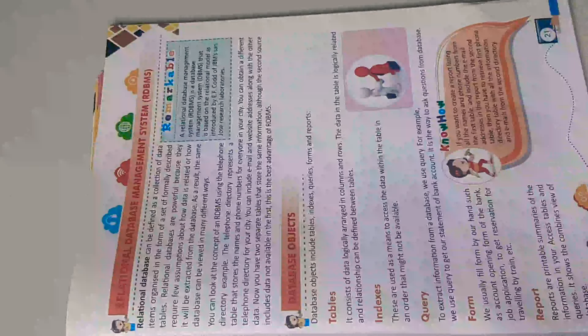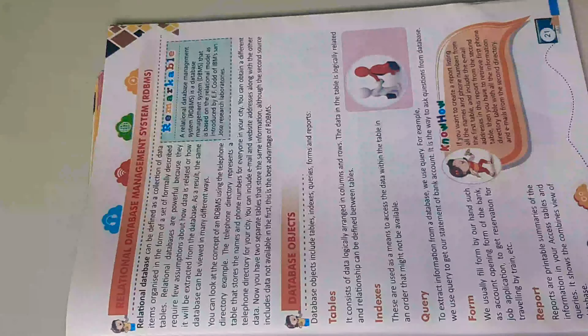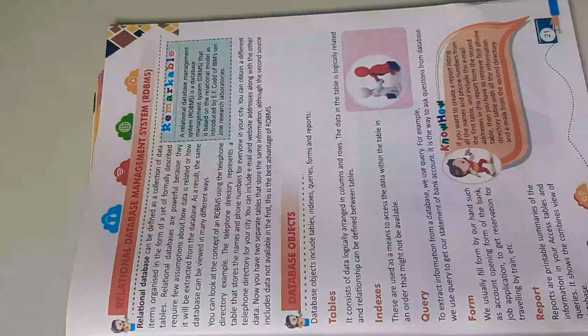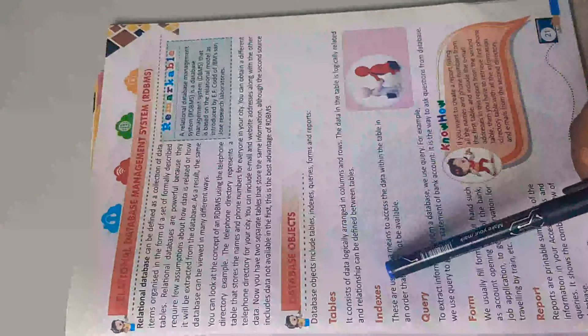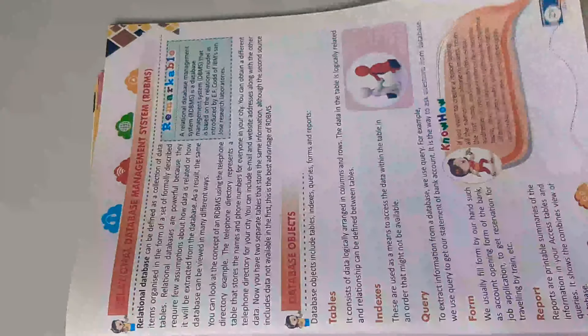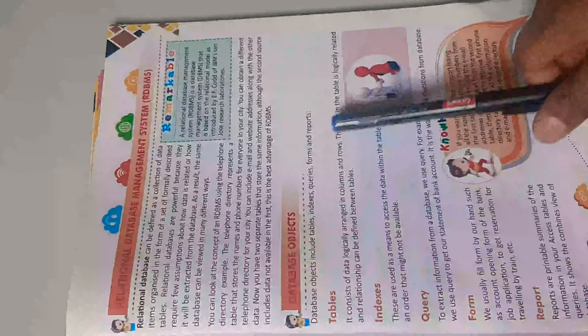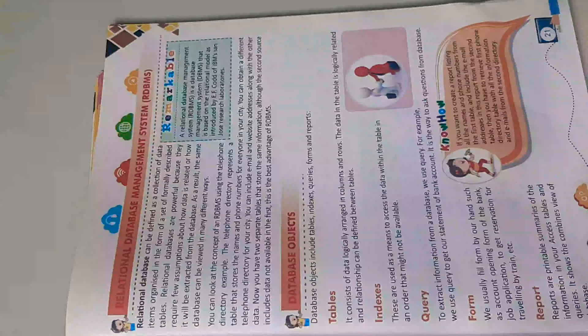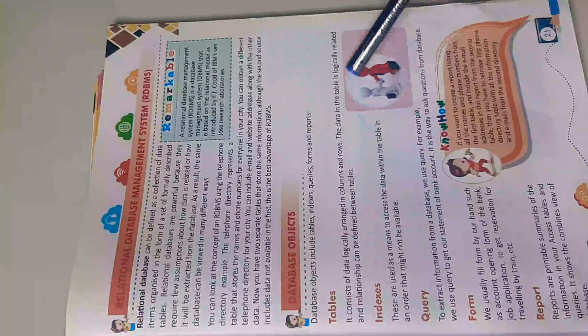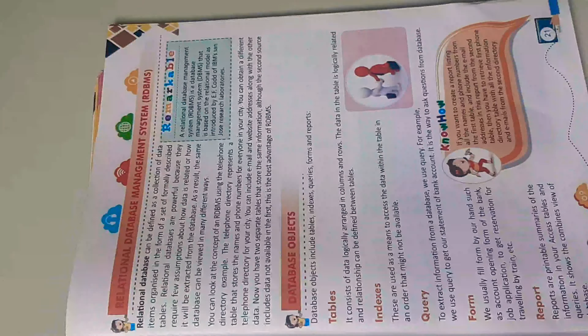Now, database objects. The objects in a database are: table, index, query, form, and report. A table consists of data logically arranged in columns and rows. The data in the table is logically related and relationships can be defined between tables.